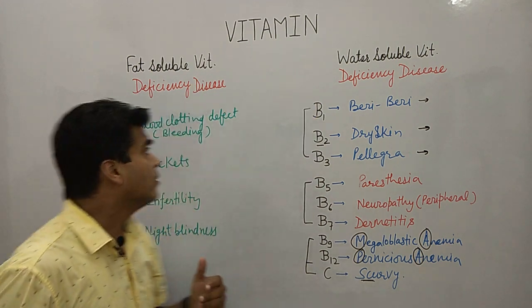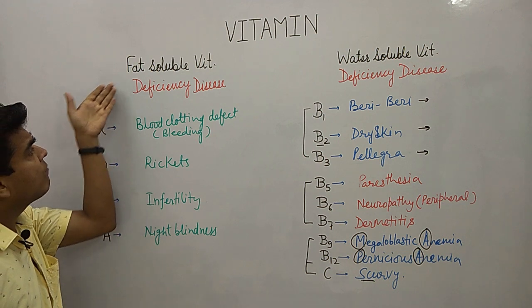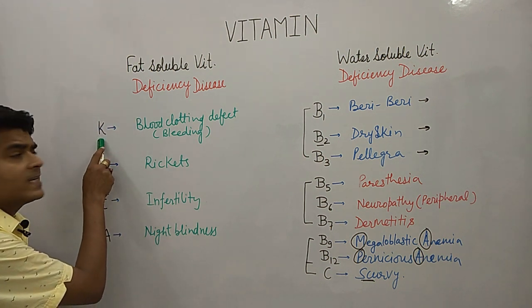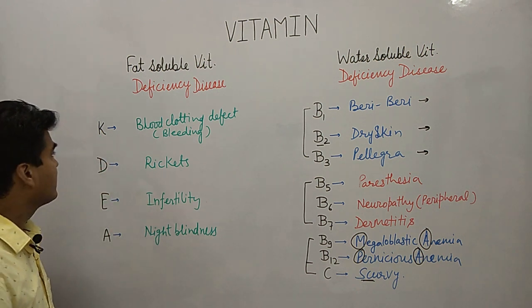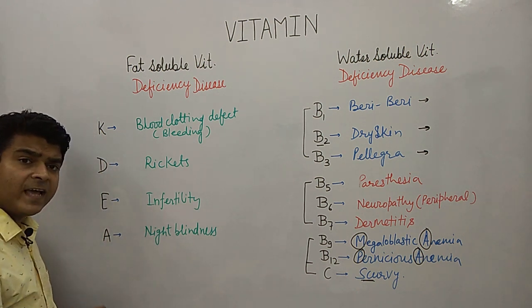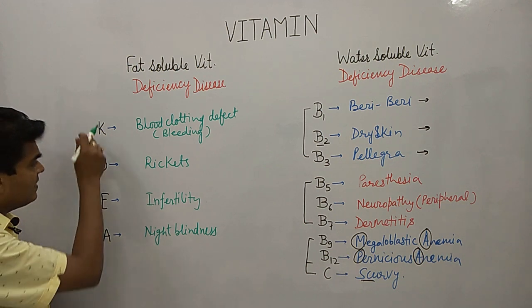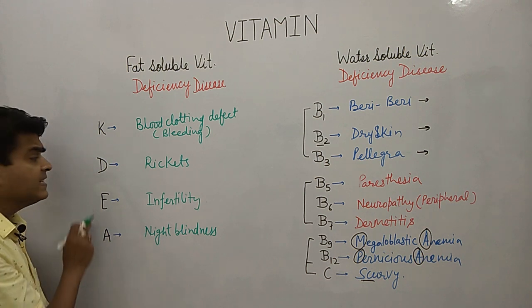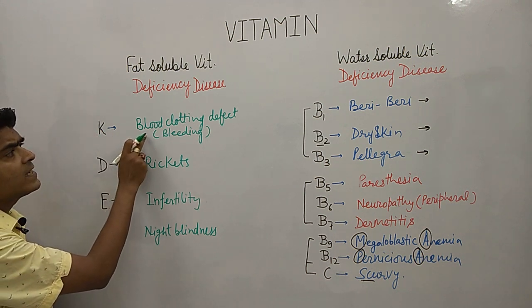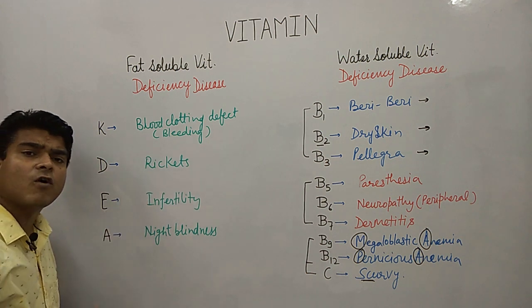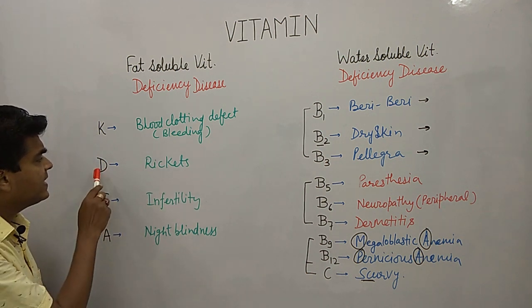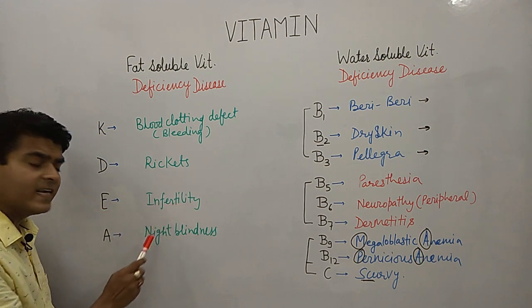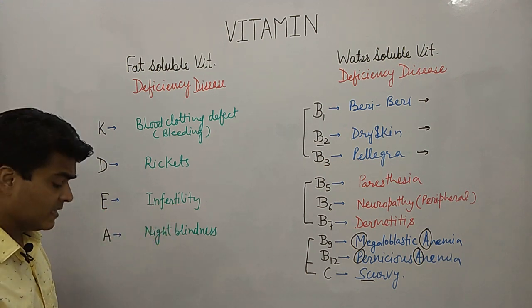We have fat-soluble vitamins and water-soluble vitamins. For the fat-soluble vitamins, we have vitamins K, D, E, and A — remember this as KDEA. Vitamin K causes a blood clotting defect, meaning it causes bleeding. Vitamin D causes rickets. Vitamin E causes infertility, and Vitamin A causes night blindness.